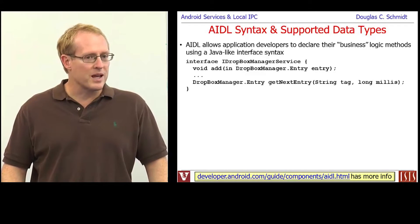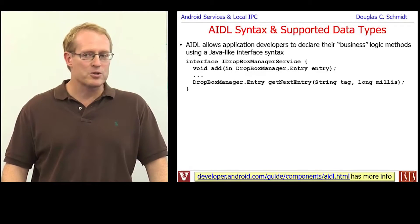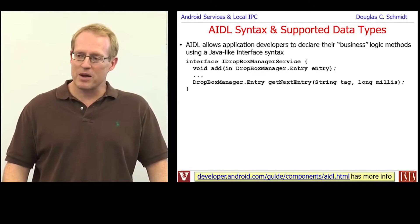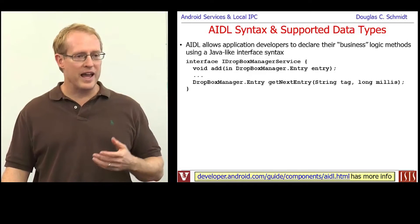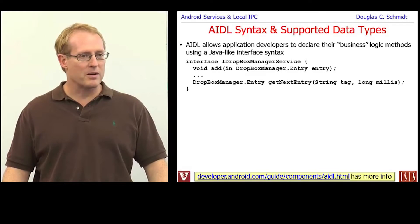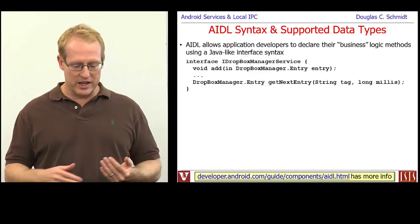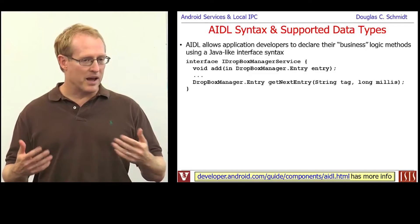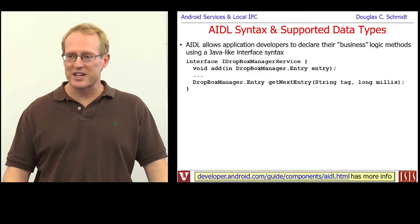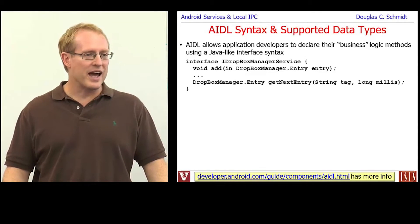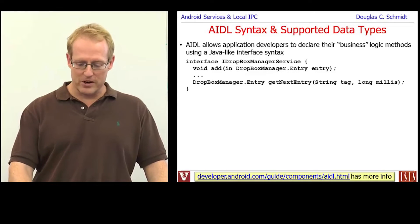Here's a very simple example that comes out of the Android source code. There's something called the Dropbox Manager Service, or the IDropboxManagerService — 'I' standing for interface. As you can see, you can add an entry, which is a Dropbox Manager entry, and you can get the next entry, iterating through things one at a time, getting back the entries in a Dropbox. That's probably used internally by Android to allow you to access your Dropbox content from your Android phone.